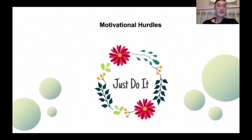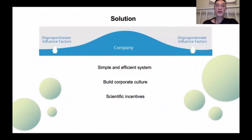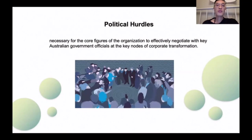The third is a motivational hurdle — how to encourage people to act quickly and persistently. A simple and efficient system is a guarantee for improving execution, allowing employees to handle their work according to specified requirements. Building a corporate culture can also improve business execution, and scientific incentive measures are another tool. The fourth is a political hurdle — the political struggle among enterprises is complicated. Therefore, it is necessary for the CEO of ACN to effectively negotiate with members of the Australian government.